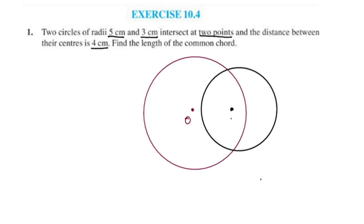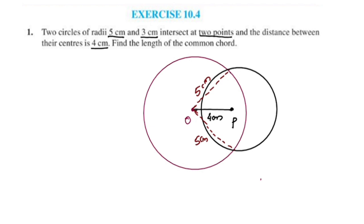The distance between centers is 4 cm. One circle has radius 5 cm and the other circle has radius 3 cm.